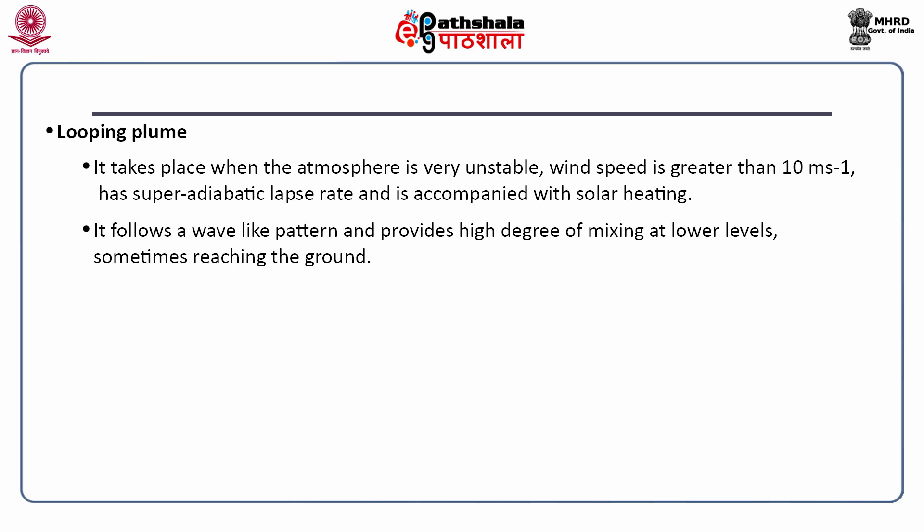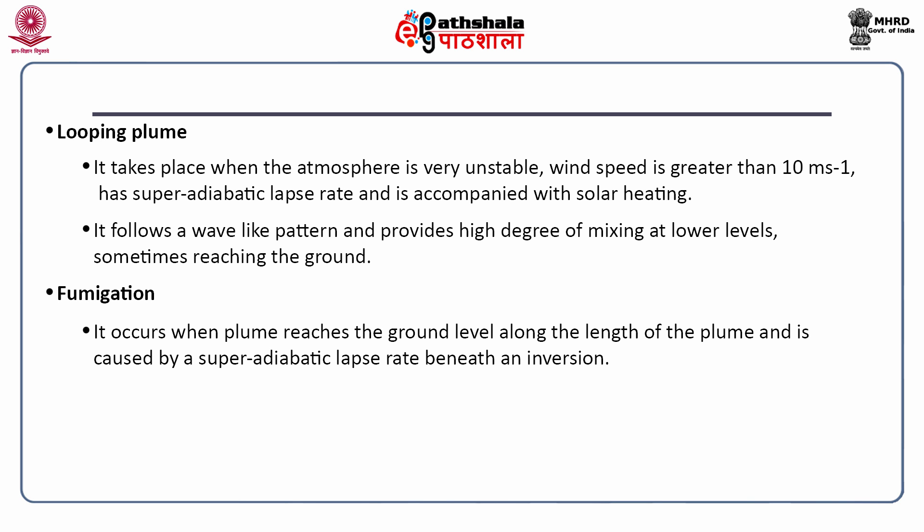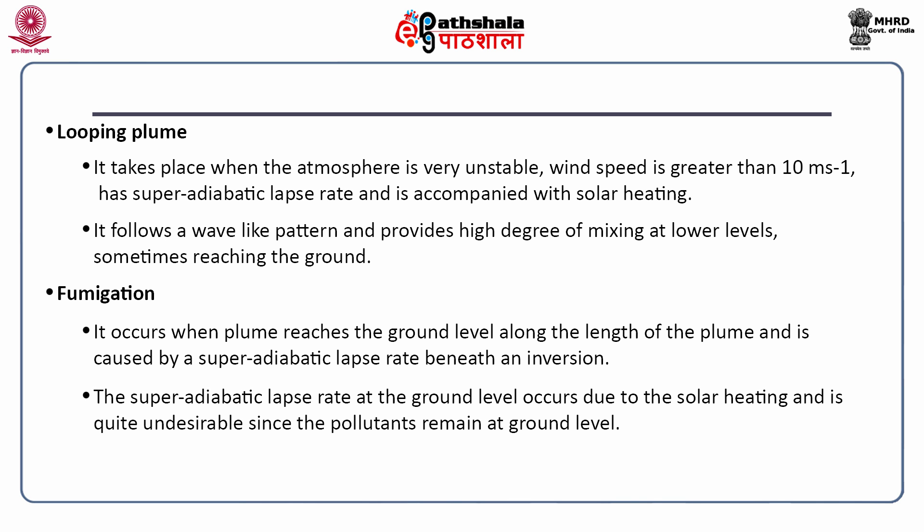The next one is fumigation plume. It occurs when the plume reaches the ground level along the length of the plume and is caused by a super-adiabatic rate beneath an inversion. The super-adiabatic lapse rate at the ground level occurs due to solar heating and is quite undesirable since the pollutants remain at ground level. This condition is favored by clear sky and light winds.